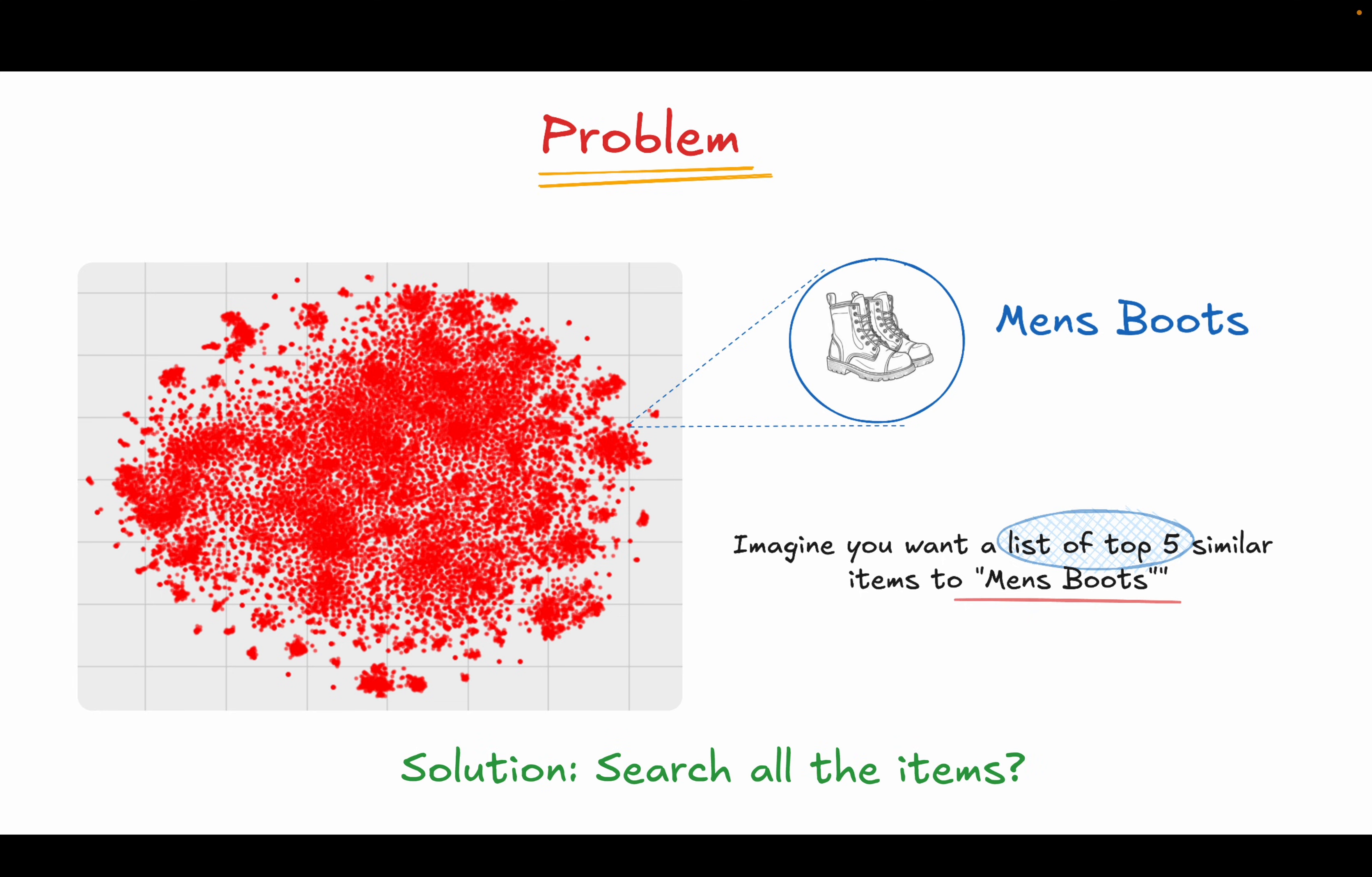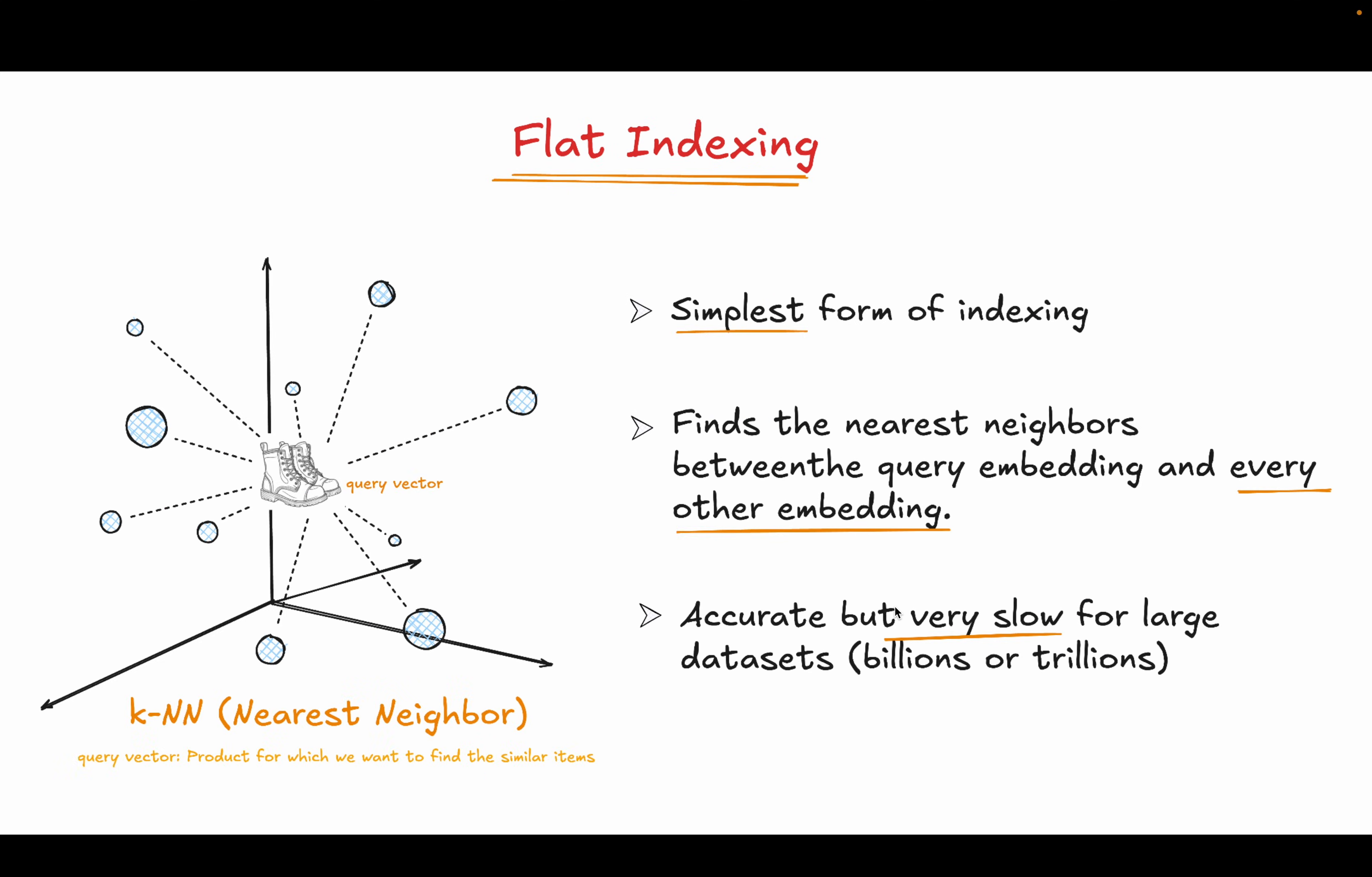One solution would be to search all the items. The simplest way to find similar items is something called flat indexing. Say we want to find products similar to these men's boots. The idea is to take the query—these boots—and compare their embedding with every single other embedding in the dataset to find the closest one. This method is called k-nearest neighbors. It's accurate because it literally checks every possible pair for similarity. But here's the problem: imagine doing this for millions and billions of items. That would take forever. You want a very time efficient way to search all these millions and billions of items while also making sure that the accuracy is reasonable enough.